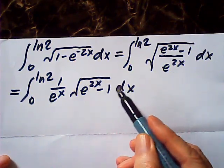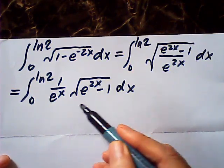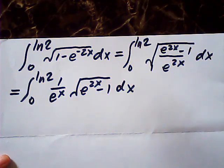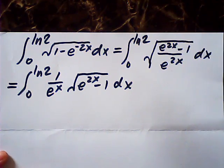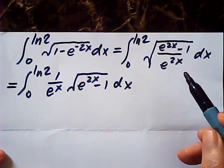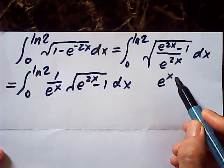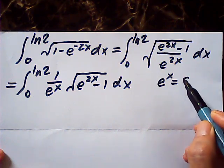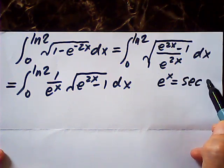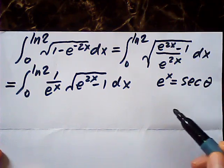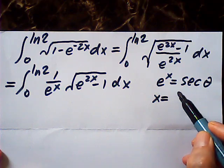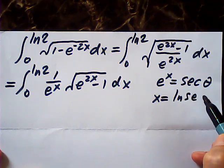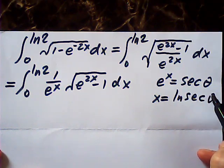When we see this kind of square root, we always use trigonometric substitution. We let e to the x equal secant theta, so x is equal to log of secant theta.